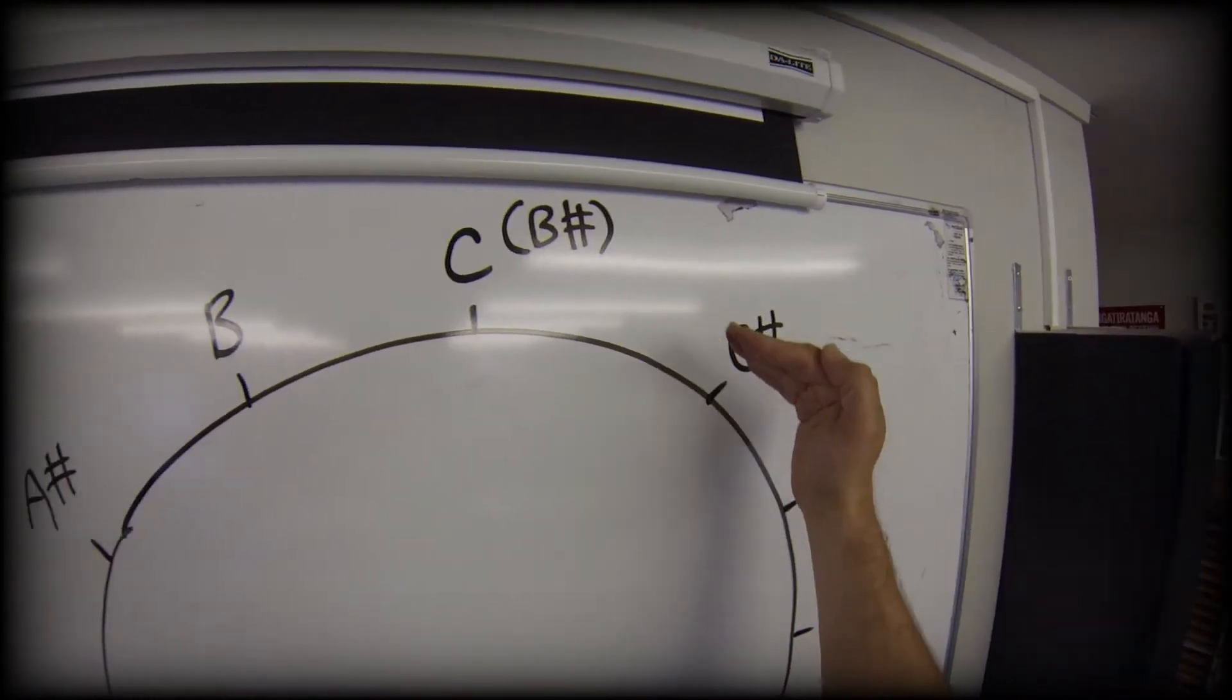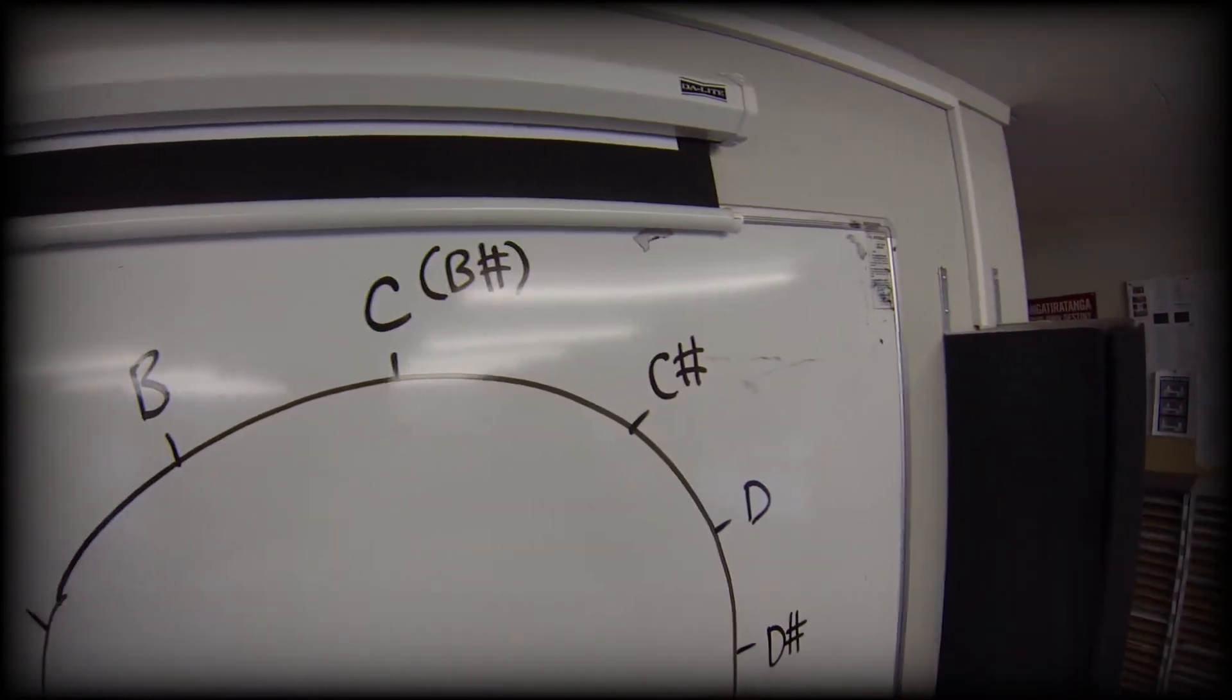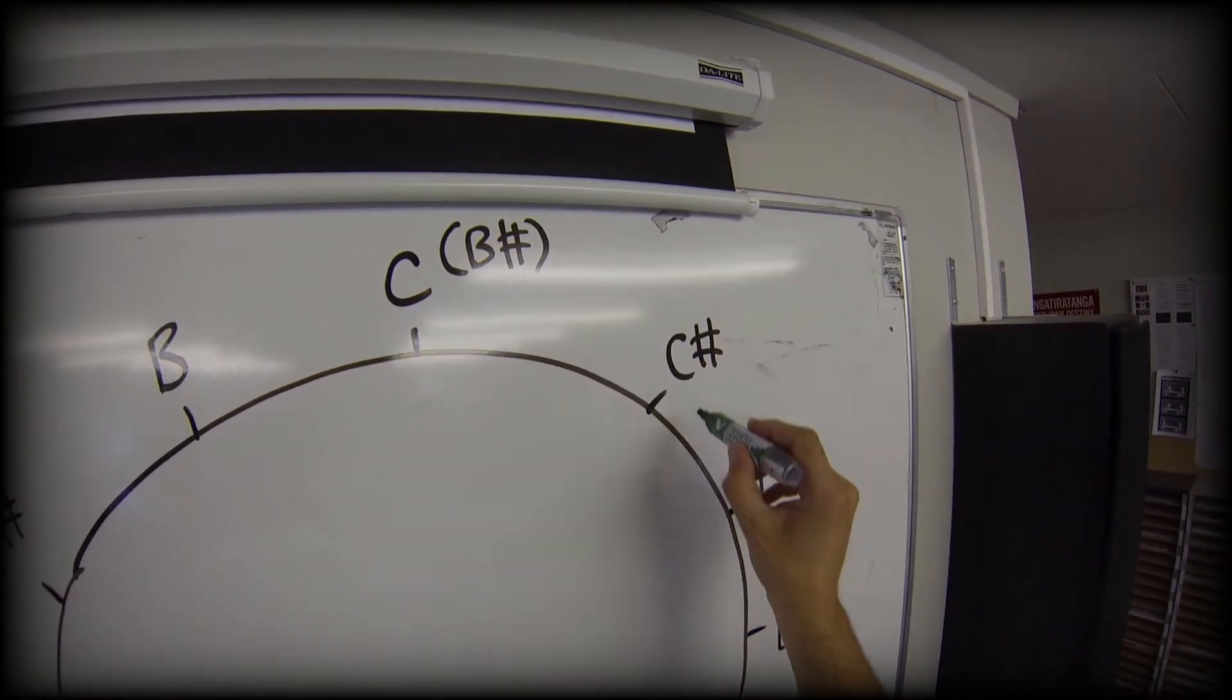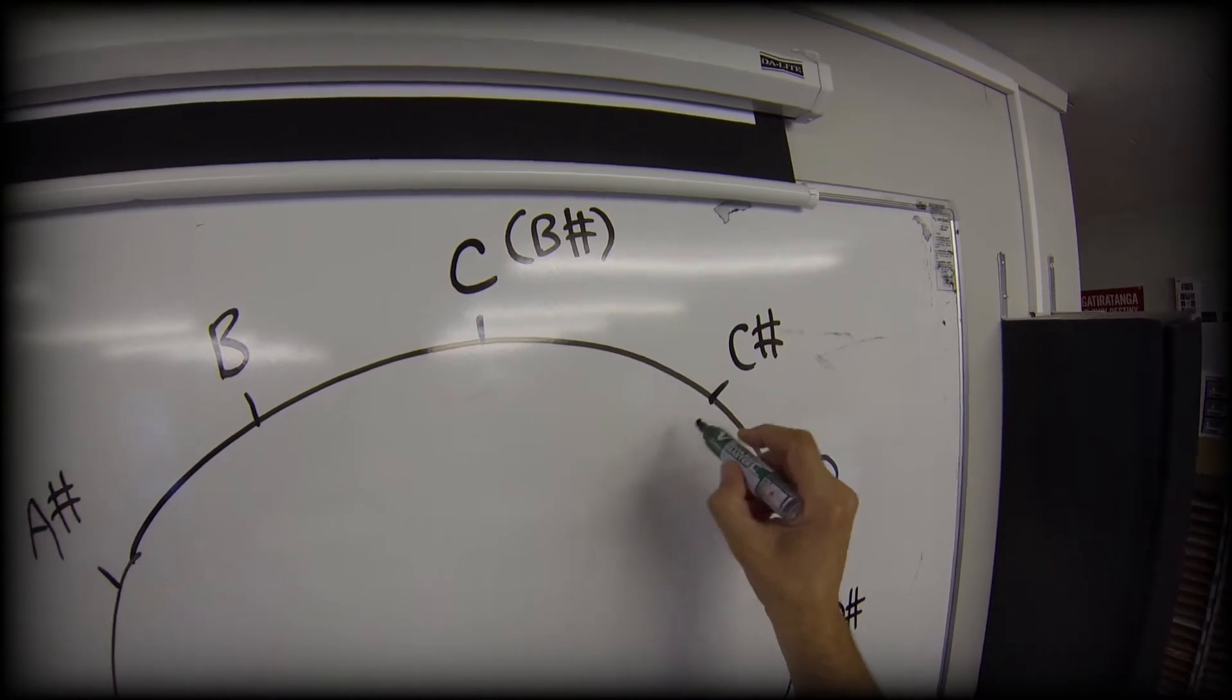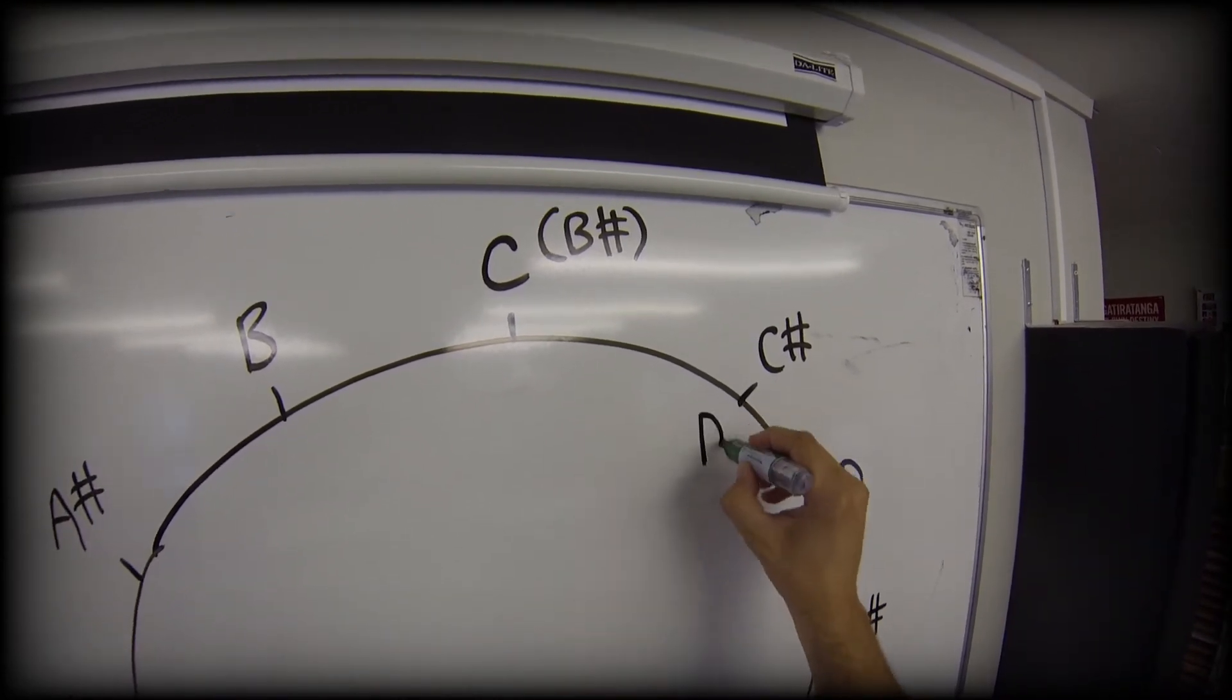Which means we go anti-clockwise one step from the D. And I'm going to put my flats in the centre of my clock. So I go D, and I flatten that to D flat.